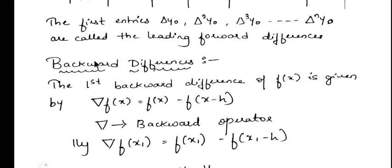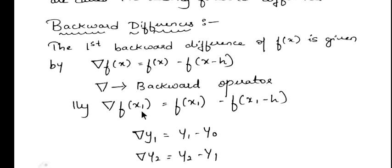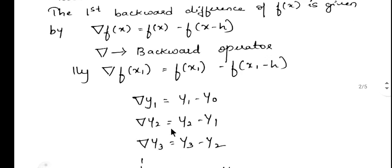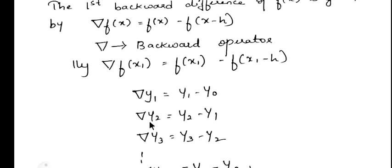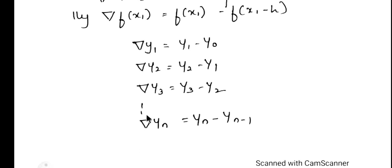Now we go to backward difference. There is a slight change between forward and backward differences. The first backward difference of f(x) is given by the backward delta operator: backward delta f(x) = f(x) - f(x - h). The backward delta symbol is called the backward difference operator. So: backward delta y1 = y1 - y0, backward delta y2 = y2 - y1, backward delta y3 = y3 - y2, and so on up to backward delta yn = yn - y(n-1).